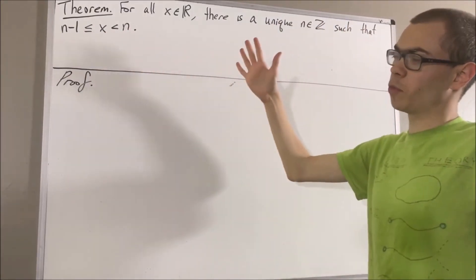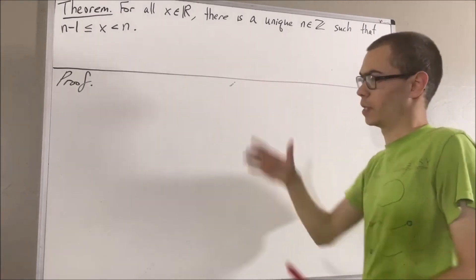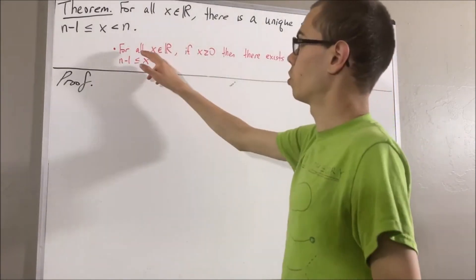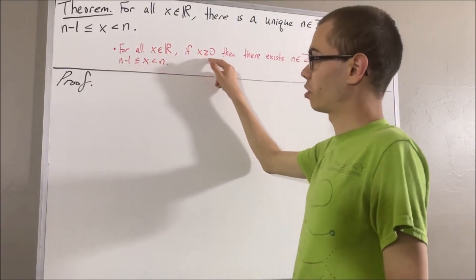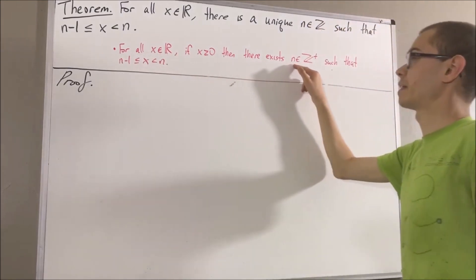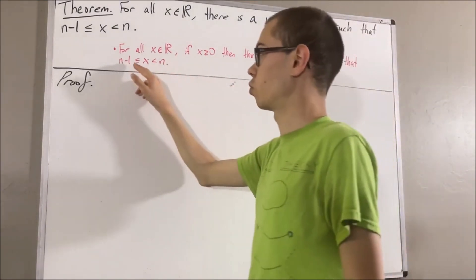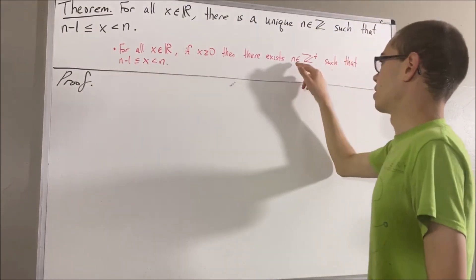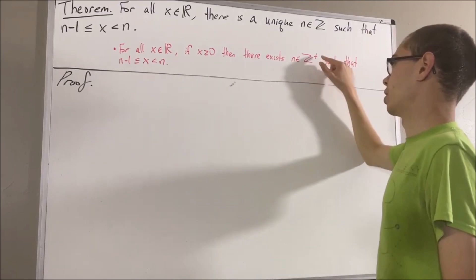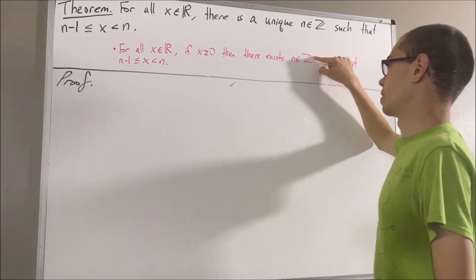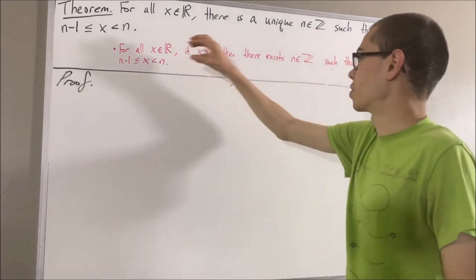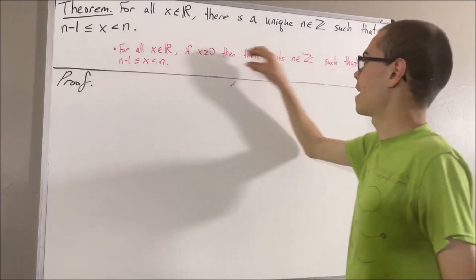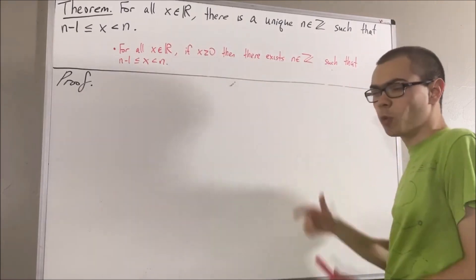Now, in proving this theorem, we are going to rely on the following preliminary result. For all real numbers x, if x is greater than or equal to 0, then there exists a positive integer n such that n minus 1 is less than or equal to x, which is less than n. Since there exists a positive integer n, clearly there exists an integer n. So this is what we're going to be using, and in the book that this is based off of, this fact is referred to as Corollary 2.4.6.